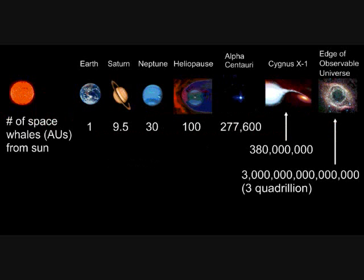Here's a table that has some more stellar objects. Neptune is around 30 space whales. When we get to the heliopause, which is as far as the influence of the Sun can reach, that's about a hundred. Alpha Centauri, our nearest star neighbor, is 277,600 space whales away. Cygnus X-1, which is the closest black hole, is 380 million, and the edge of the observable universe is three quadrillion space whales away, or Austin Underhills, from the Sun.